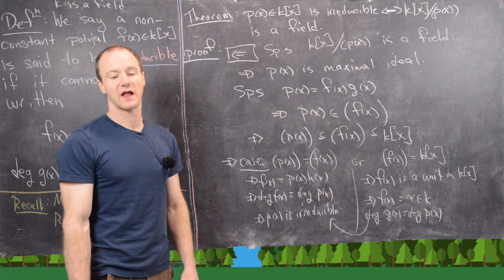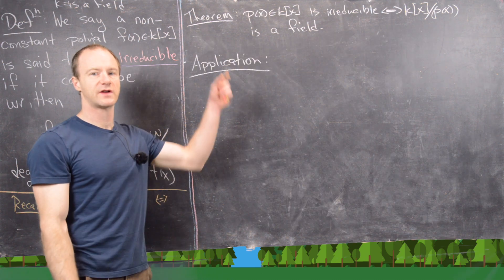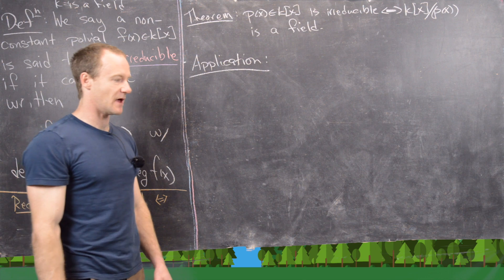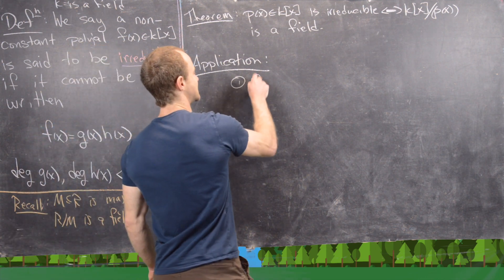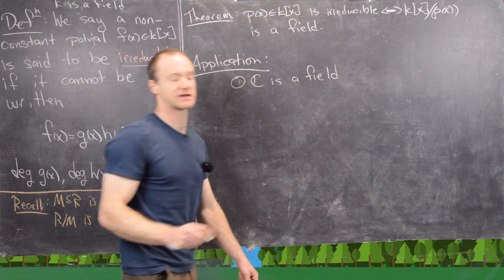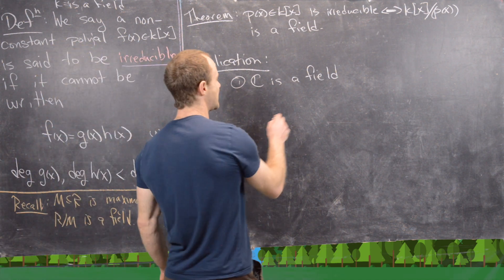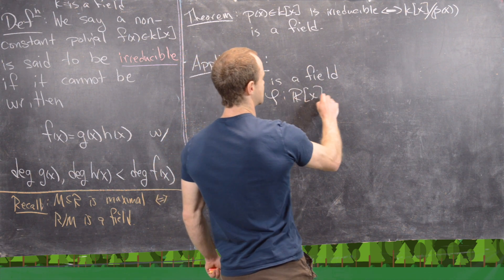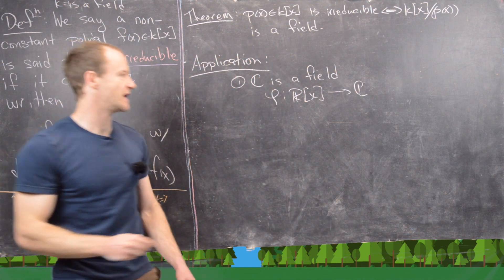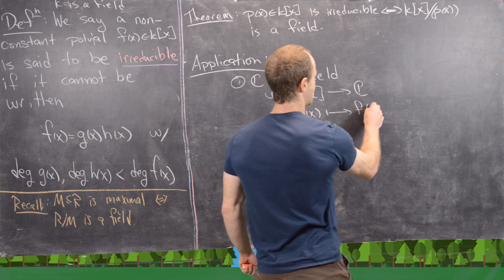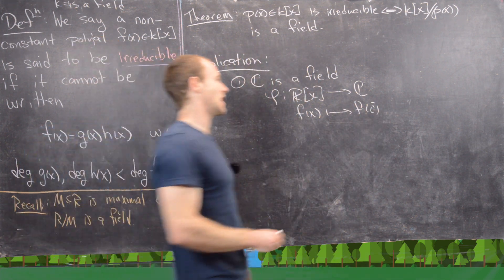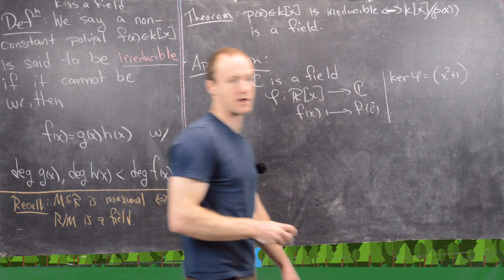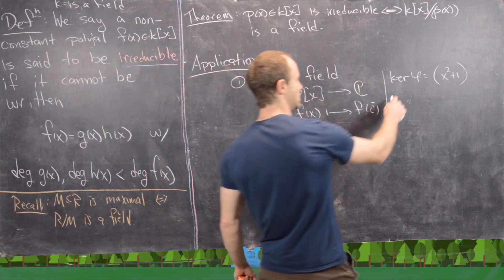I'll clean up the board and then we're going to do a quick example of an application. Now that we've proved this result, let's look at a quick application. So one application is that ℂ is a field. We all know the complex numbers form a field, but we can also prove it by this theorem. Consider the map φ from ℝ[x] to ℂ defined by the evaluation homomorphism, sending f(x) to f(i). That's going to be an onto homomorphism, and you can easily check that the kernel of φ is the principal ideal generated by x² + 1.